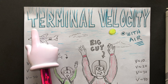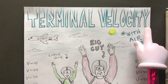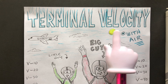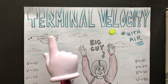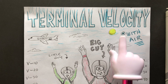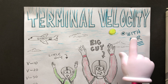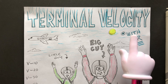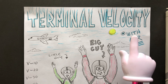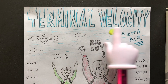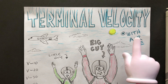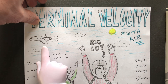This video is about terminal velocity. Terminal velocity is when an object falls through the air and goes faster and faster, encountering more air resistance, until eventually the rate of acceleration equals zero because the net force on the object equals zero, and then it falls at the same velocity. This all has to happen through air.